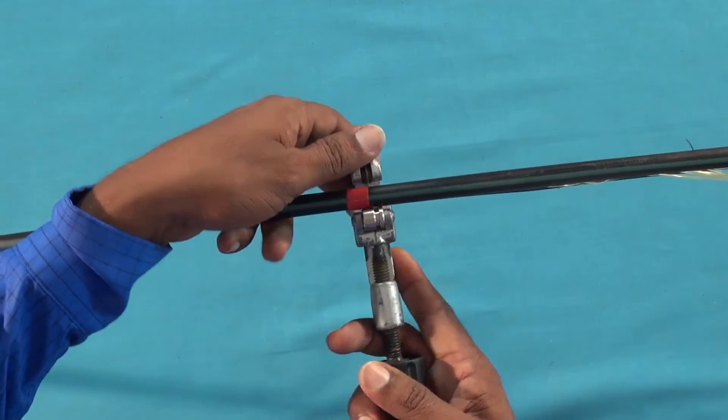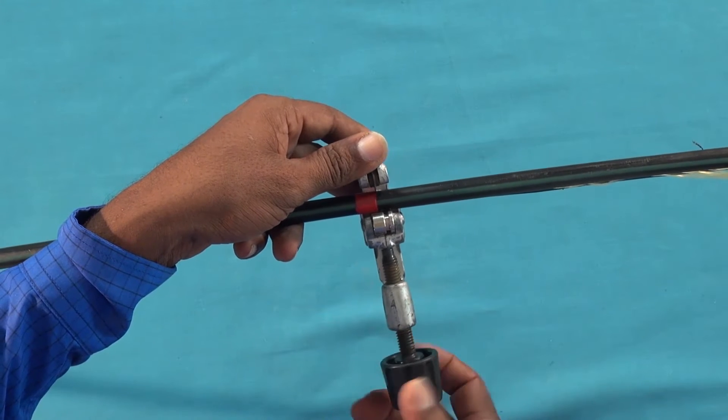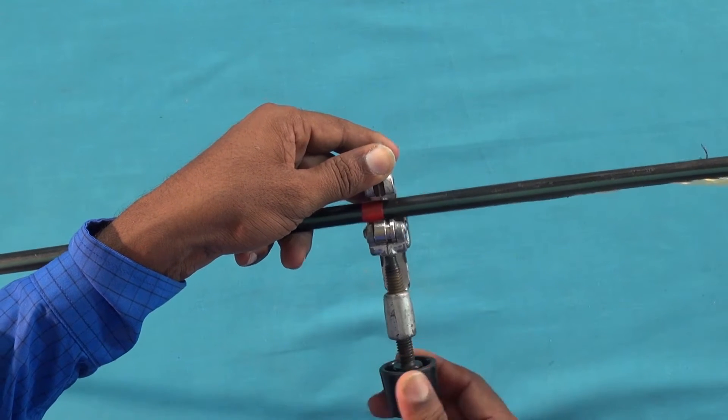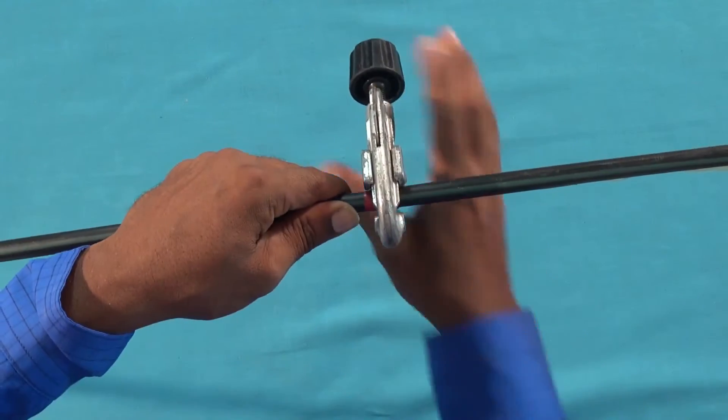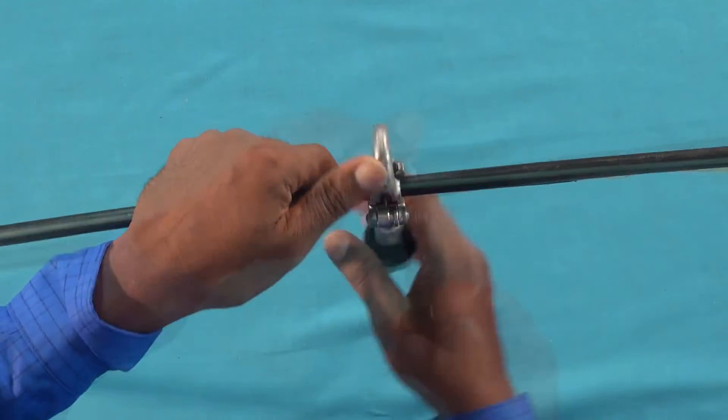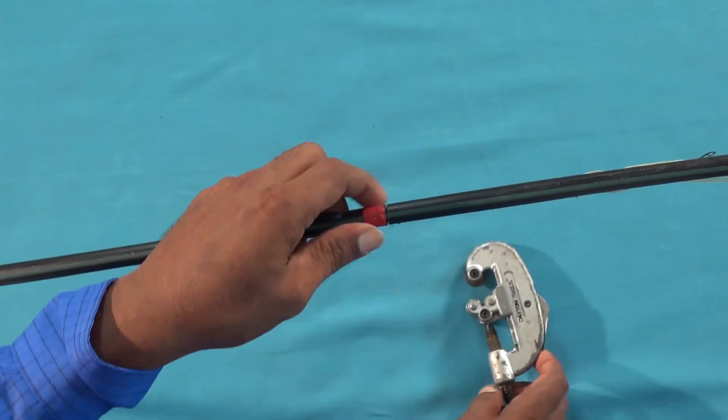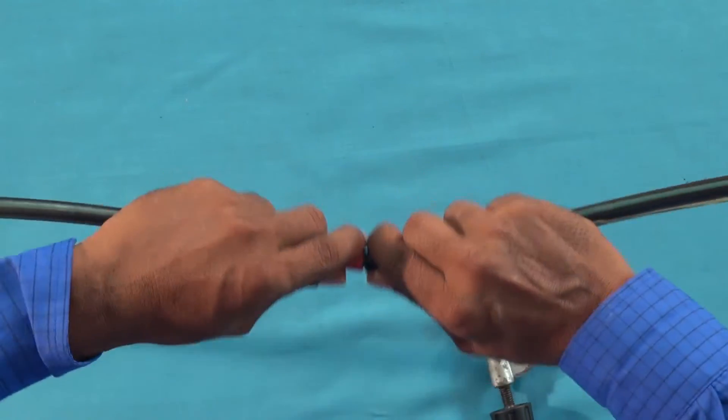Now again, using the cable cutter, cut the cable sheath near the reference point. As the cable is already cut, the sheath can be removed.